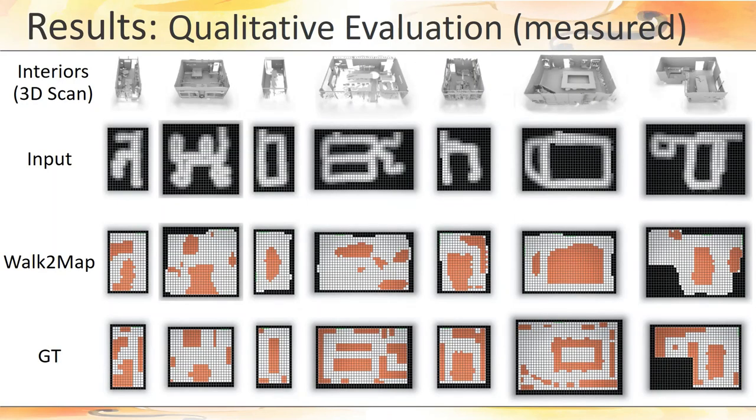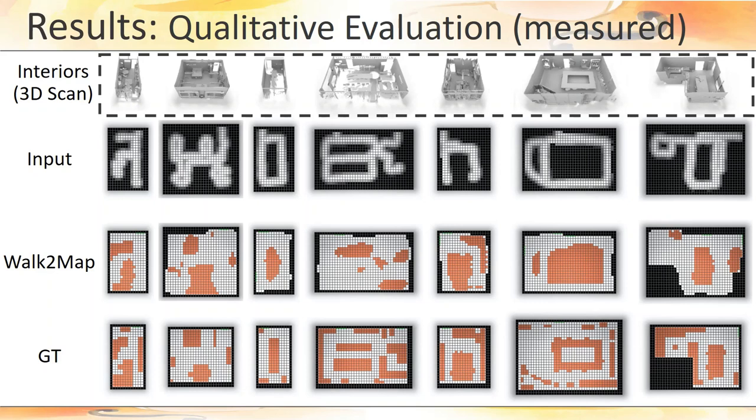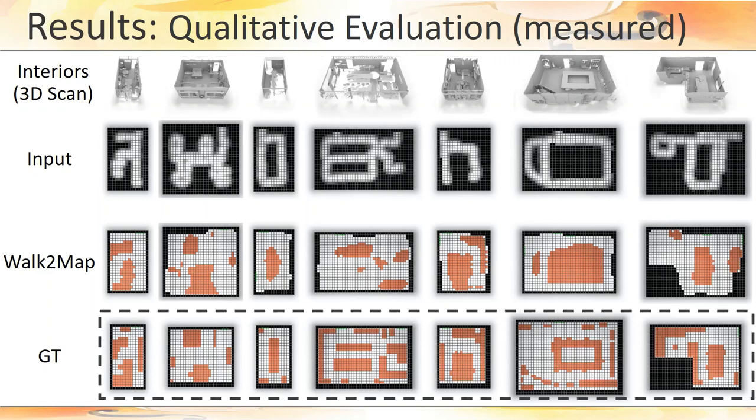The natural question at this point is how the approach fares with real-world acquired data. Here we show some samples taken from our test set of measured trajectories, with the top row showing the 3D scans of the spaces in which such trajectories were recorded, and that we use to create the ground truth floor plans.